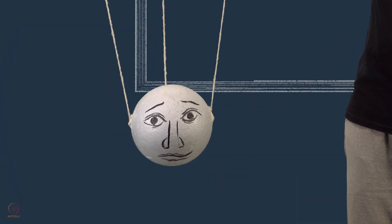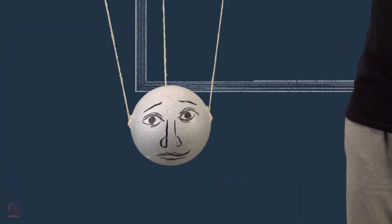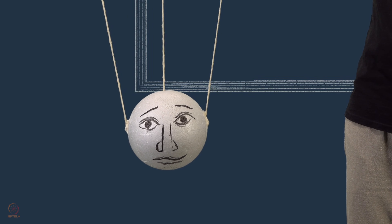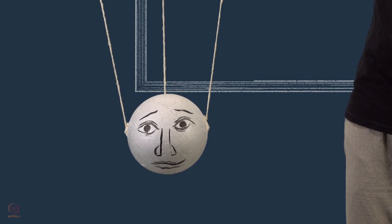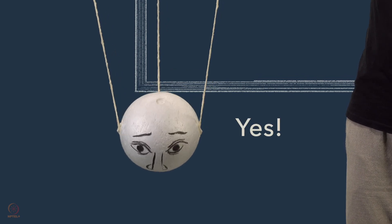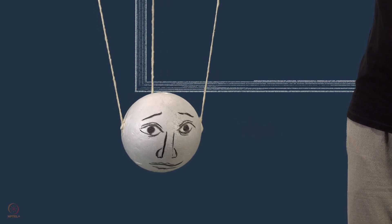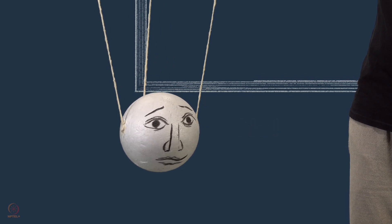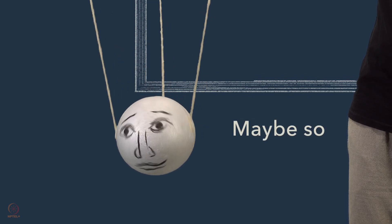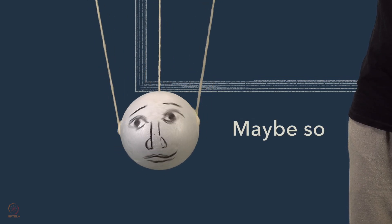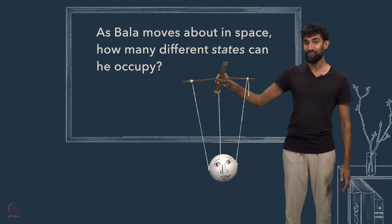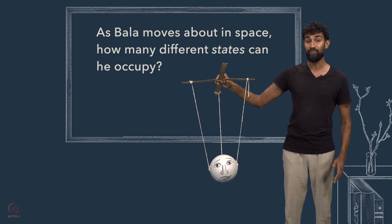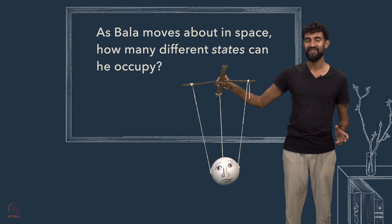Bala has just three strings, but he can move in all kinds of ways. He can nod his head, yes. He can shake his head, no. And he can even say, maybe so. As Bala moves about in space, how many different physical states can he occupy?